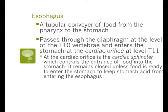The esophagus is a tubular conveyor of food from the pharynx to the stomach. It passes through the diaphragm at the level of T10, and enters the stomach at the cardiac orifice at T11. The orifice is controlled by a sphincter, which should be closed unless food is ready to enter the stomach, to keep stomach acid from entering the esophagus. When that fails, it's often the cause of reflux.